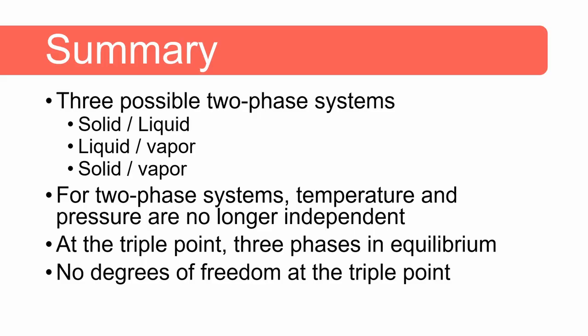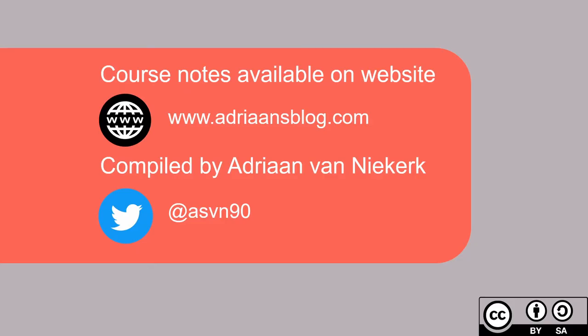In summary, there are three possible two-phase systems: solid-liquid, liquid-vapor, and solid-vapor. For two-phase systems, temperature and pressure are no longer independent. At the triple point, all three phases are in equilibrium and there are zero degrees of freedom. The course notes which these videos are based on are available at adriansblog.com. I'm also on Twitter at @asvn90 — if you have any questions I will gladly answer them. Thank you for watching and I'll see you in the next video.